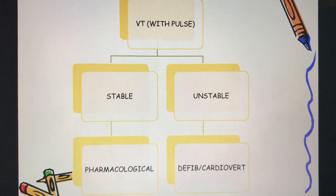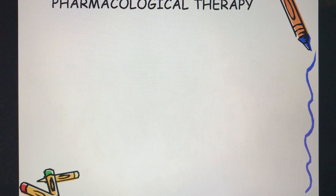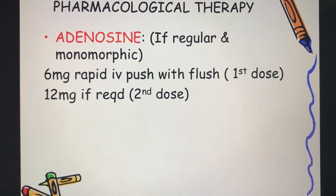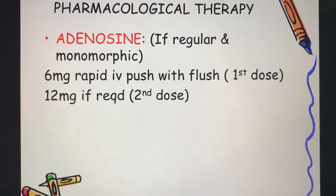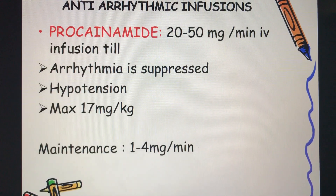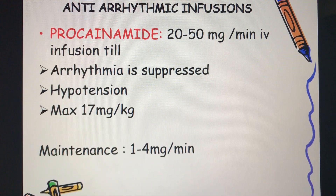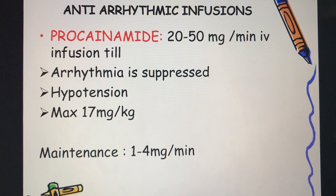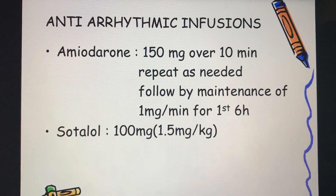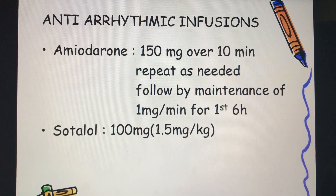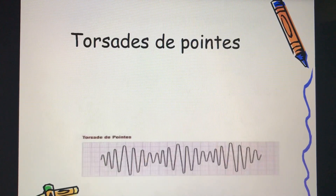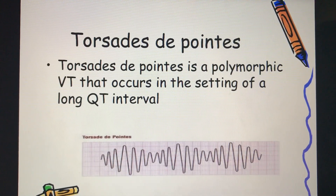If the patient is hemodynamically stable, consider pharmacological management. Options include adenosine 6 mg IV push with flush, or 12 mg as a second dose, for regular monomorphic VT. Other options include procainamide 20–50 mg per minute IV until the arrhythmia is suppressed or the patient develops hypotension, amiodarone 150 mg over 10 minutes (repeat as needed), and sotalol 1.5 mg per kg.